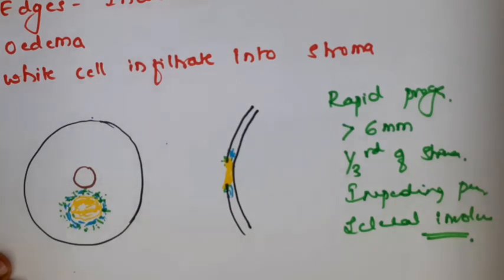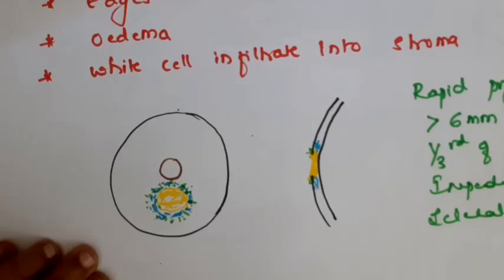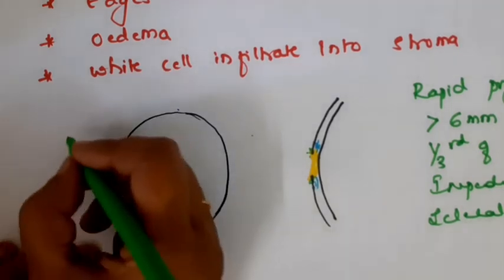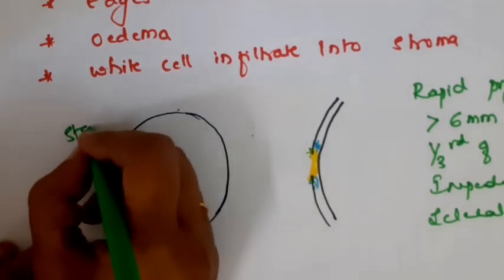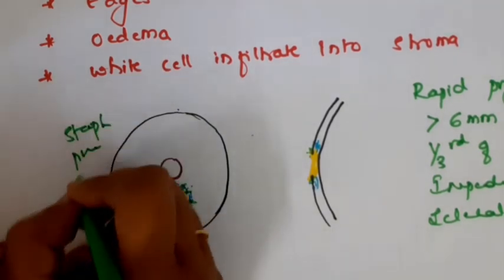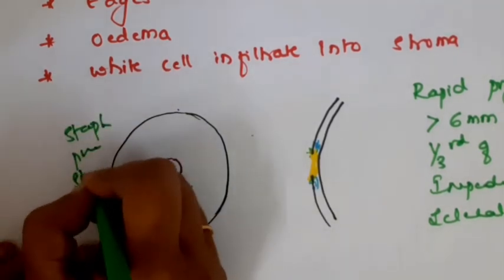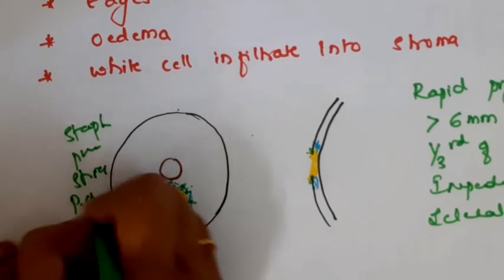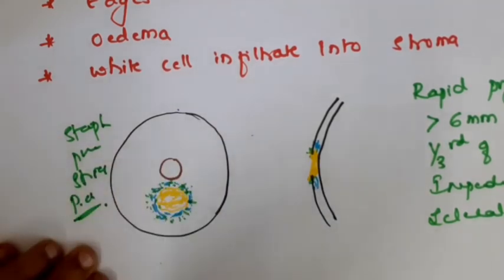The organisms which lead to such rapid progression of the corneal ulcer are Staphylococcus aureus, pneumococci, streptococci, and Pseudomonas aeruginosa. These are the organisms which lead to severe bacterial corneal ulcer.